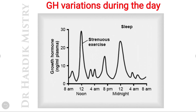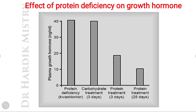Growth hormone variations during the day: during strenuous exercise, growth hormone secretion increases, which is why people who exercise regularly have good body build and development. During sleep, there is also an increase in growth hormone secretion. When protein is deficient, the growth hormone level becomes much higher. With carbohydrate treatment, the growth hormone level doesn't decrease and remains high, but with protein treatment there will be a reduction in the growth hormone level.